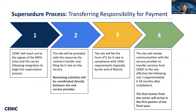The Supercedure process really is just two things you need to do: First is filing for E-Rate, typically by the end of March. Second is contacting the service provider to transfer the contract from CNIC to your school. CNIC will reach out to you and also the service provider when it's time to start the Supercedure process. The contract will be transferred by July 1st, approximately 6 to 18 months after the installation.